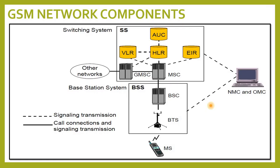The GSM network is divided into two systems. Each of these systems are comprised of a number of functional units, which are individual components of the mobile network. The two systems are: 1. Switching System (SS), and 2. Base Station System (BSS).